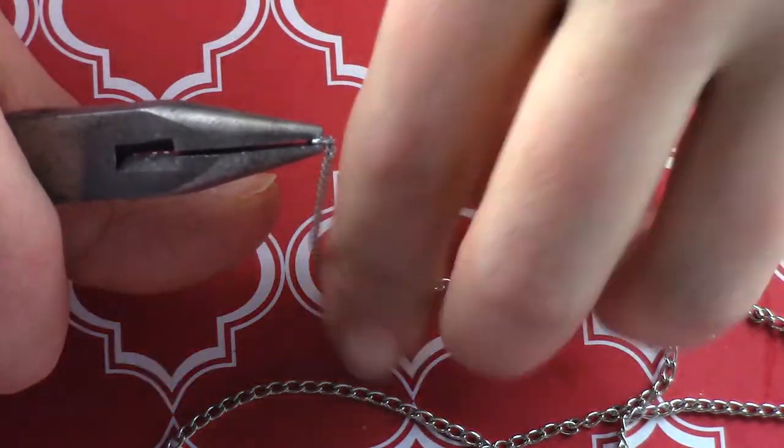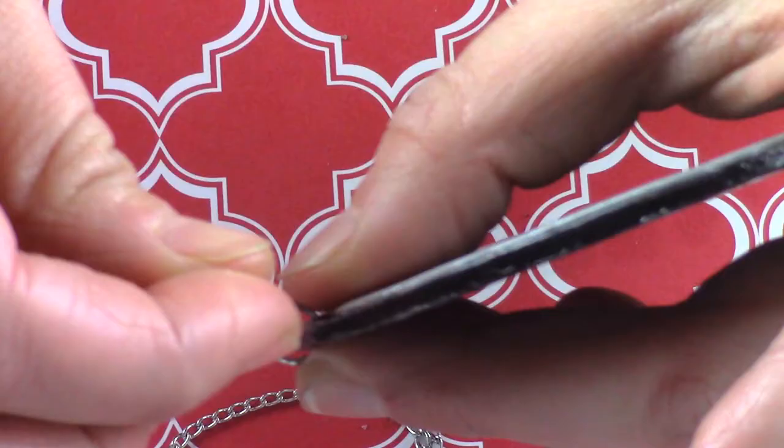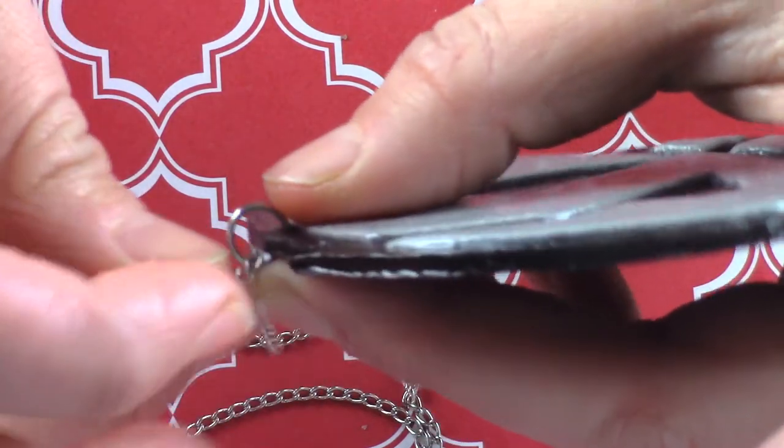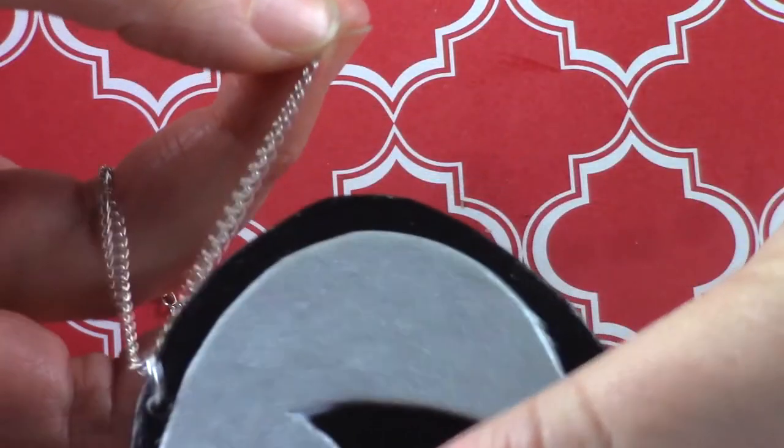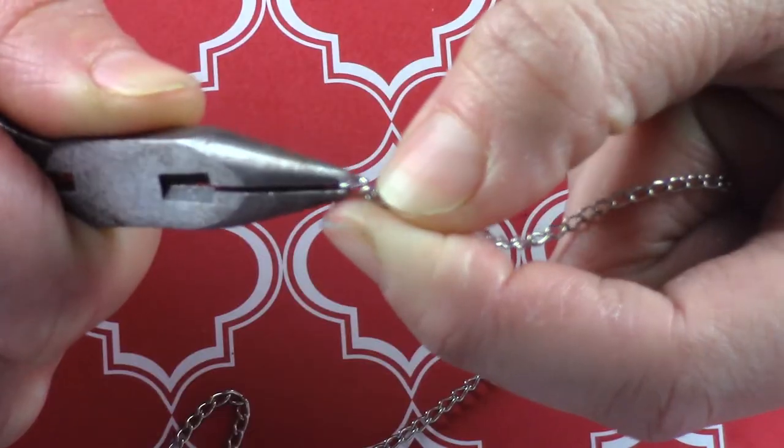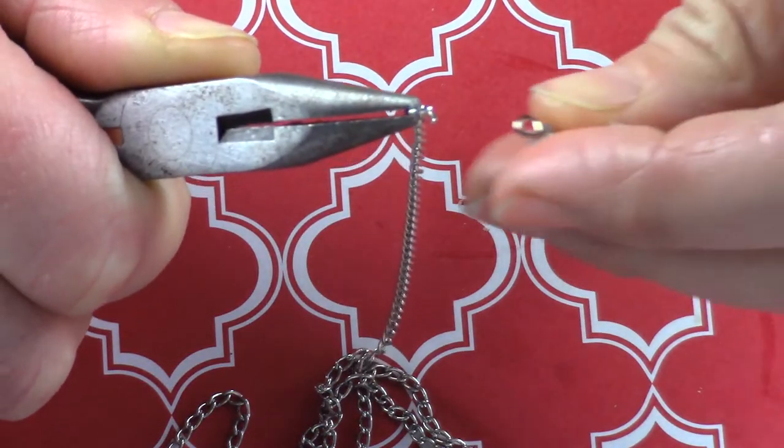Add the clasp to the chain on one side using a jump ring. Then put the other end of the chain through the jump ring on the logo. And lastly, attach the other end of the clasp to the chain and you're done!